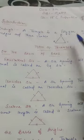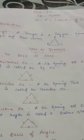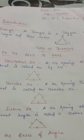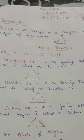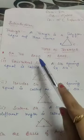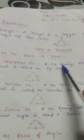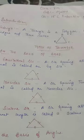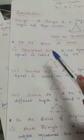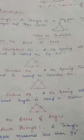We have a total of 6 types of triangles — 3 triangles on the basis of sides, and 3 types on the basis of angles. The first is the equilateral triangle.